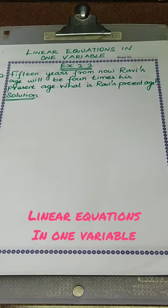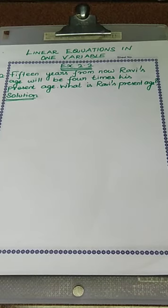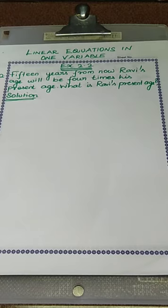Hello students, welcome to the session of linear equations in one variable, exercise 2.2, continuation only. Problem 12: 15 years from now, Ravi's age will be 4 times his present age. What is Ravi's present age?